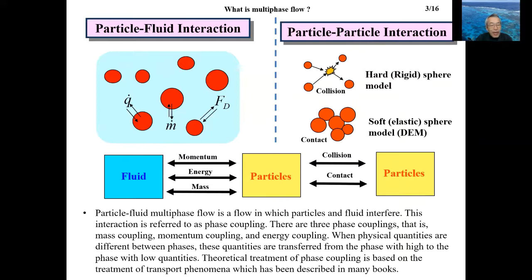To calculate changes in particle velocity due to particle-wall and particle-particle collisions, two models are known. One is the hard sphere model and the other is the soft sphere model. The hard sphere model assumes a particle has a rigid body and is formulated using the coefficient of restitution and friction coefficient. In dense phase flows, a particle often contacts two or more particles simultaneously. In such cases, you must inevitably rely on the soft sphere model. This will be explained in detail in Lecture 7.